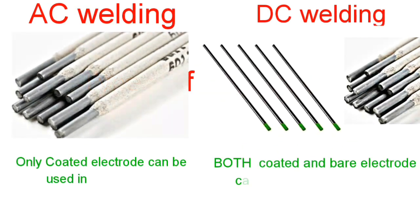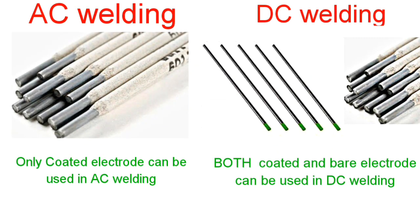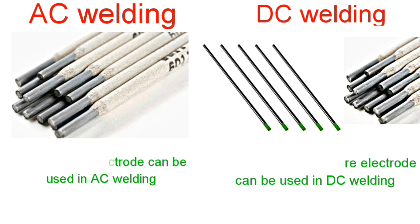Types of Electrode: Only coated electrodes can be used in AC welding, whereas in DC welding both coated and bare electrodes can be used.